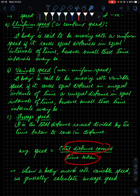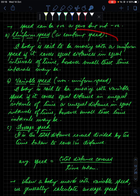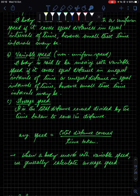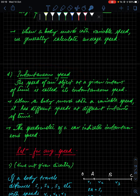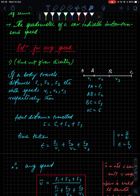If a body is consistently having uniform speed, then the average speed and the uniform speed will be equal — that needs to be remembered. Instantaneous speed is the speed at a certain instant — what the speedometer shows you at this moment. It is the speed of the object at a given instant of time.